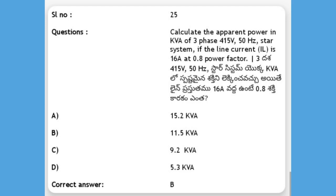Next, calculate the apparent power in KVA of a 3-phase, 415 volts, 50 Hz star system, if the line current is 16 amps at 0.8 power factor. Options: A) 15.2 KVA, B) 11.5 KVA, C) 9.2 KVA, D) 5.3 KVA. The answer is B, 11.5 KVA.